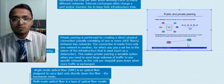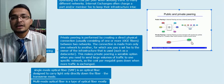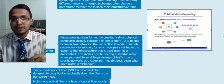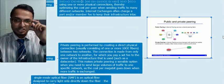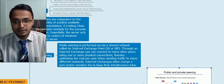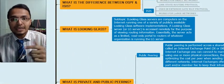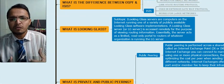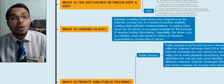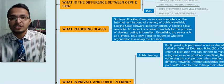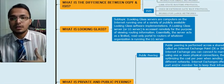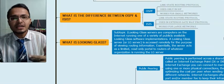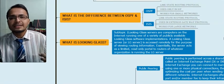Moving towards our next question: what is looking glass? Looking glass is software used to view the routing information of a server. There are different websites you can visit to locate the routing information of your router.